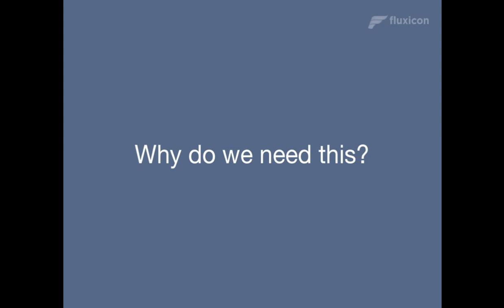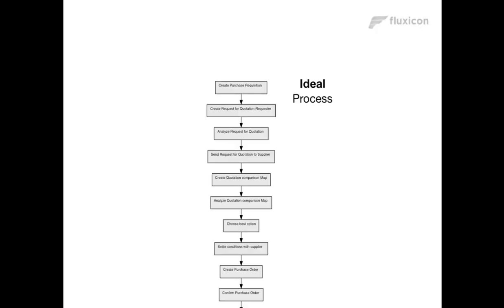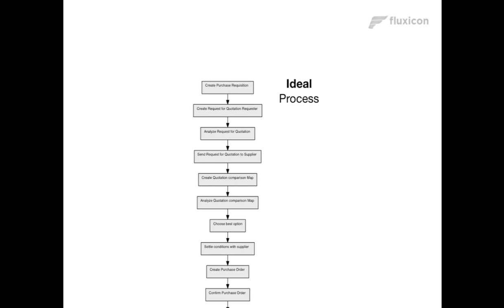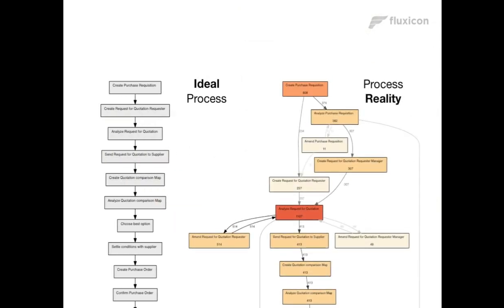But why do we need it? What's the motivation behind using process mining? A good way to look at it is to think about how ideal or documented processes are specified. Often they're relatively simple and structured — if you ask someone how they do their work, they typically say, we do first this, then this, and it's relatively structured. However, if you look at the real processes, how they are performed in reality, you realize the actual processes are much more complicated. There's rework, there's variation, processes differ and are just much more complicated than how they're typically documented.